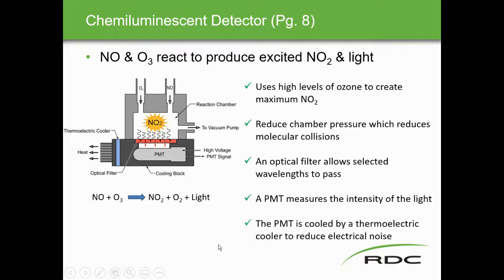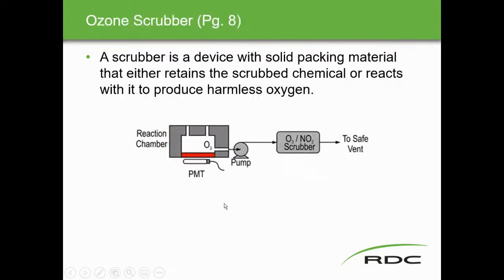NO2 and O3 are toxic and must be scrubbed before venting. A scrubber uses solid packing material that either retains chemicals or reacts with them to produce harmless oxygen. Surplus O3 is pumped out, scrubbed, and only safe oxygen is vented. The NO2 in the exhaust stream is also scrubbed.